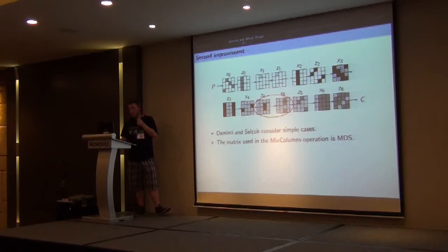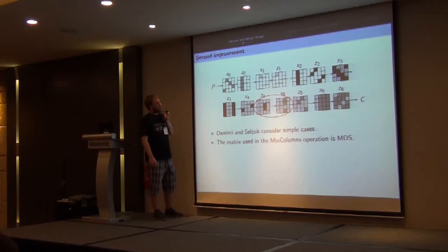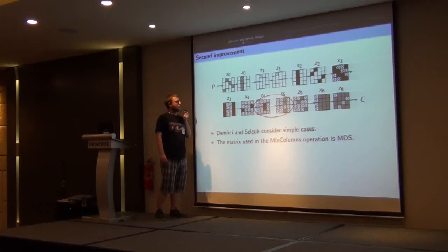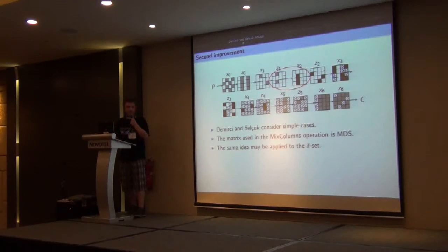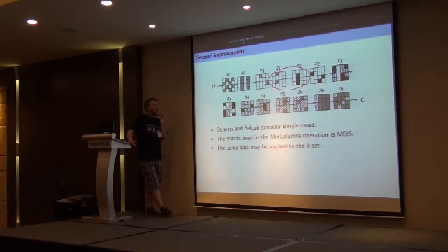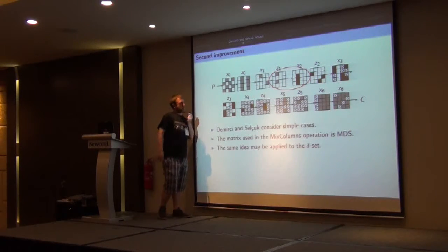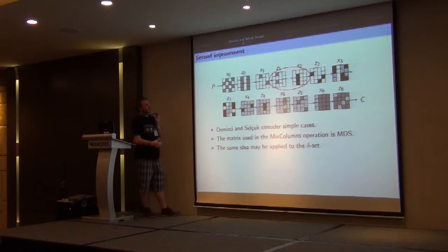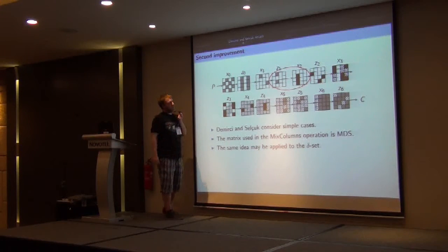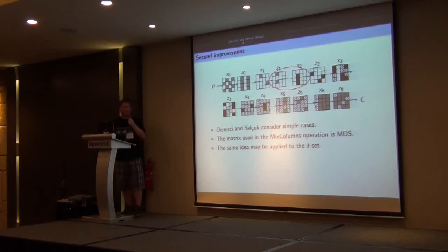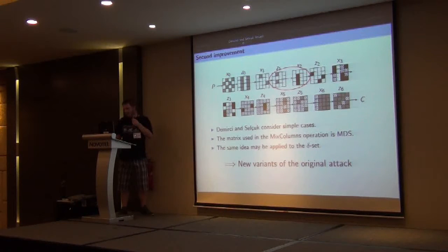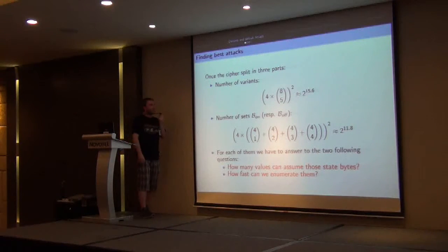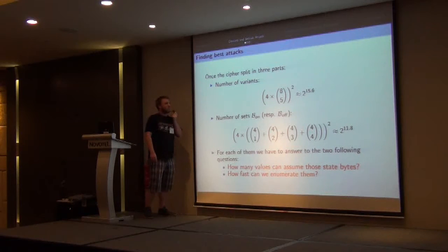This idea may be applied to generalize the delta-set. Instead of considering a set of 256 AES states such that one byte is active and the others are constant, we consider a set of 256 AES states such that exactly five bytes are active between those two states. In that case, it will affect the size of the structure needed in the attack and thus the data complexity. Also, the byte of Z1 must be guessed despite the use of normal sequences. This allows mounting new variants of the original attack, and once we have chosen the middle round for the offline phase, we can mount approximately 2 to the 16 variants.